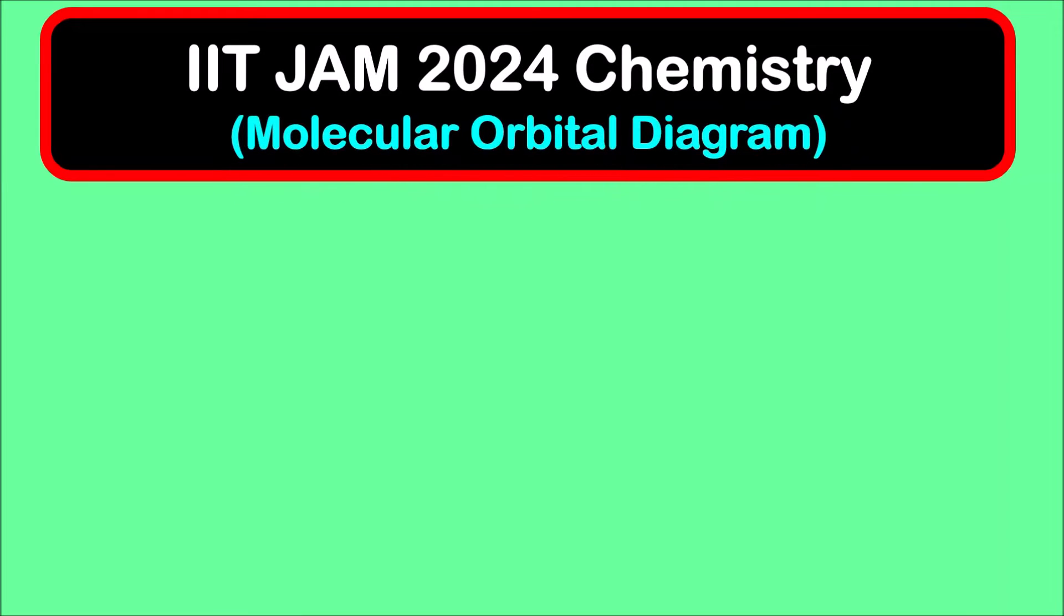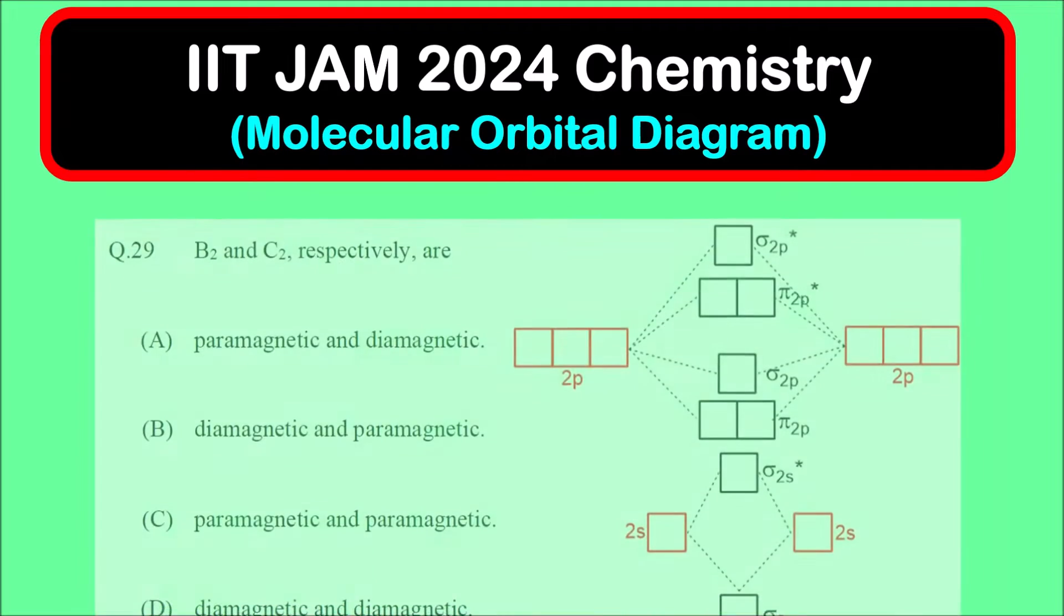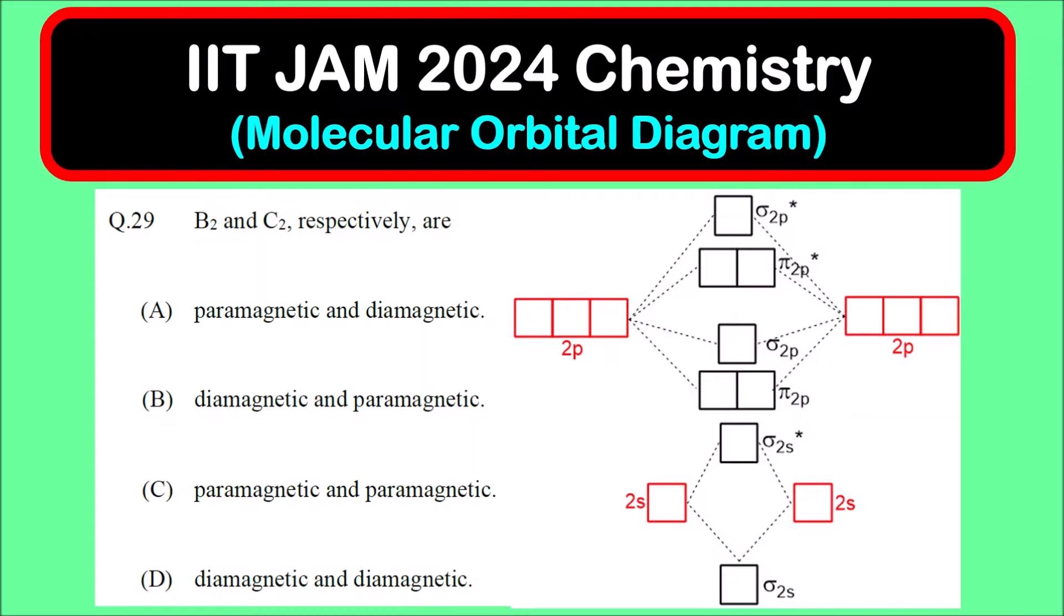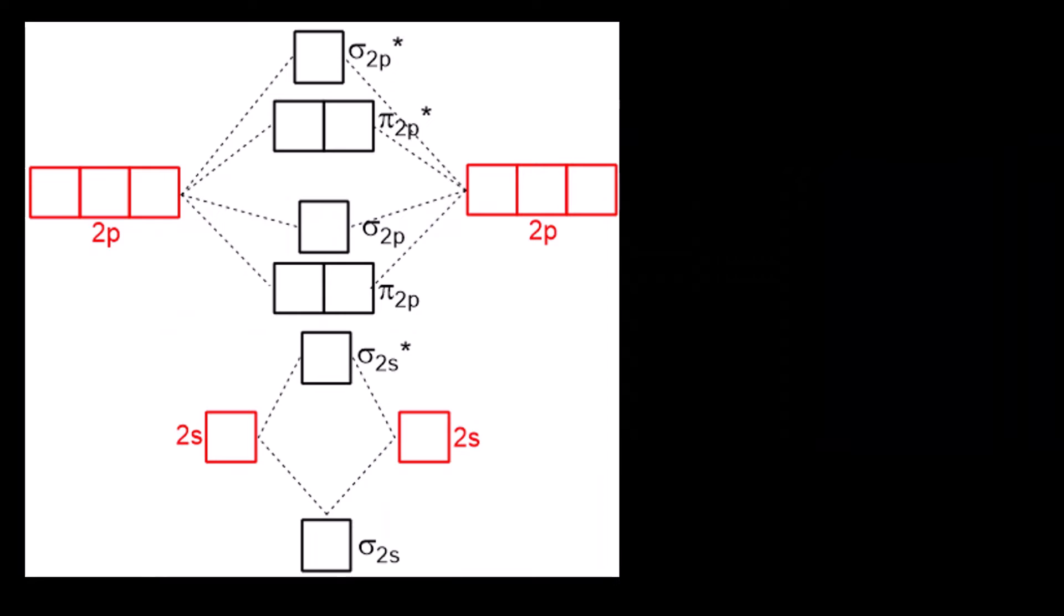Hello everyone, welcome to Chemison Complete Chemistry. In this video, we are going to solve a question on molecular orbital diagrams from the IIT JAM 2024 Chemistry paper. The question asks about B2 and C2 respectively, and we need to comment on their magnetic nature - whether they are diamagnetic or paramagnetic.